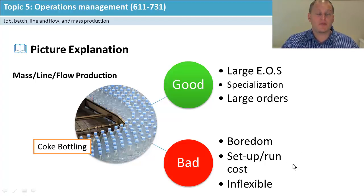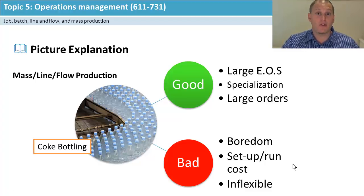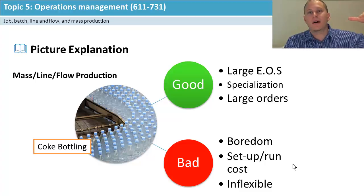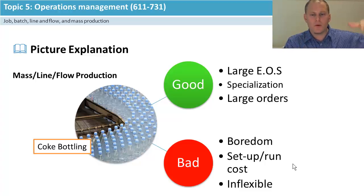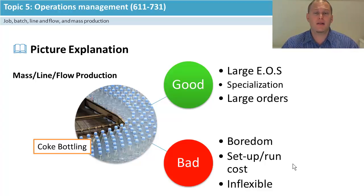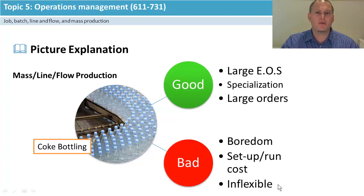The setup and run costs can be really huge — setting up machines can cost millions or even hundreds of millions of dollars depending on the industry. Once set up, you have a huge R&D cost. If you think about the product life cycle, the setup cost is enormous, so your total fixed costs get broken down over a long time before you recover them, and price skimming has to kick in. Most importantly it's really inflexible — you can have exactly what you want as long as it's the same thing.